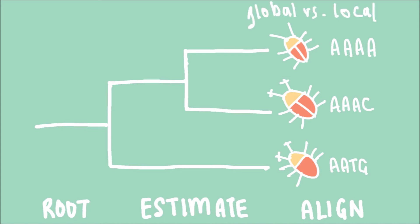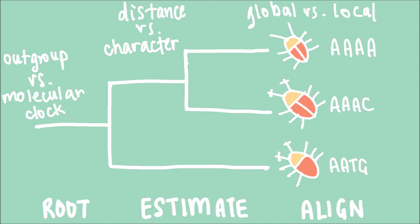Sequence alignment has two main options: global or local. Tree estimation can be done using distance-based or character-based methods. Routing options include using an outgroup or a molecular clock approach. Given that there are so many different options, these models are limiting cases that can only be applied to specific situations.